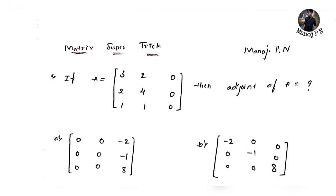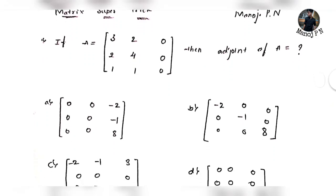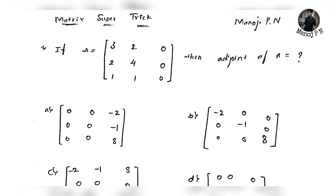What do you want to use in the shortcut? You can use it as a matrix, as a symbol, or as a cofactor format. You can use it as a formula. Look at this matrix: Matrix A is equal to [3, 2, 0; 2, 4, 0; 1, 1, 0]. Then, what is the adjoint of A?